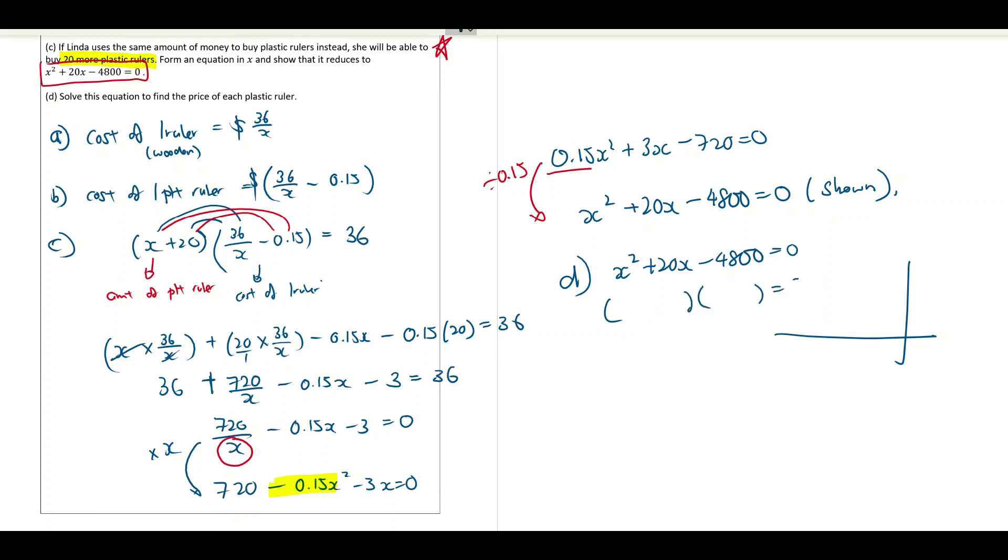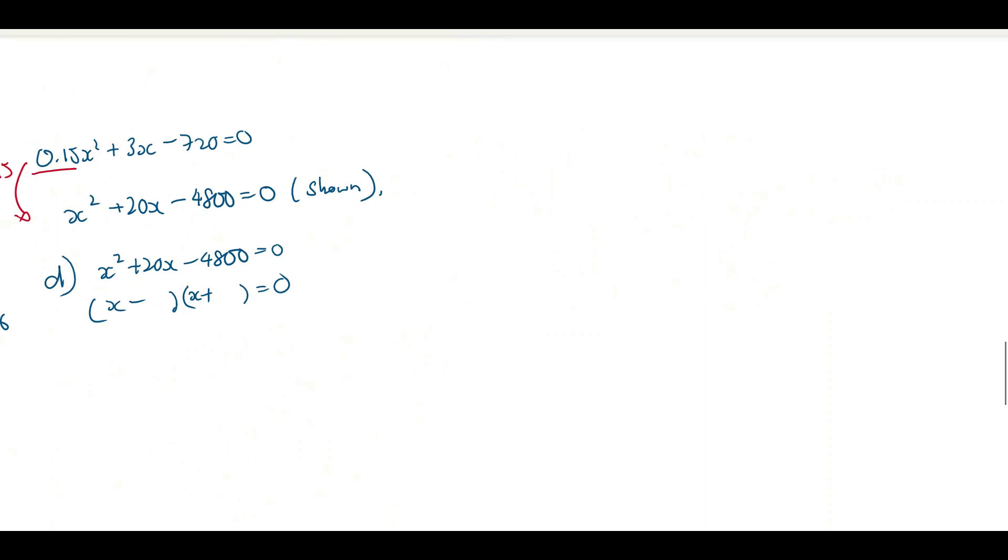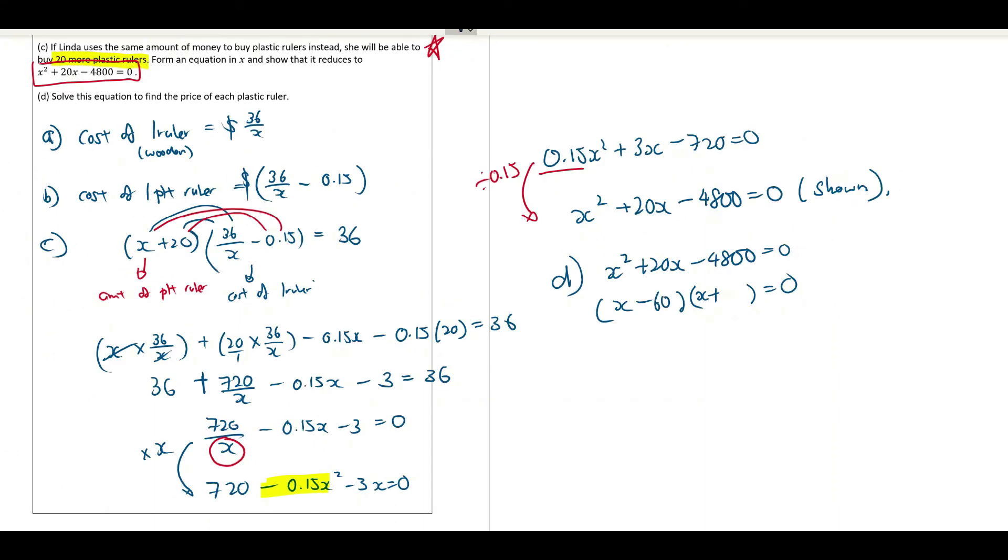X minus 1, X plus 1. That would be, just take out your calculator and do it. So you have X minus 60 and X plus 80 equals 0.